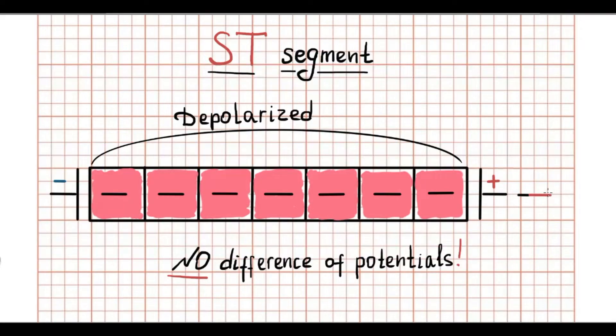Therefore, ECG machine shows either the electric line which called ST segment. So ST segment represents the period when the all mass of myocardium is depolarized.